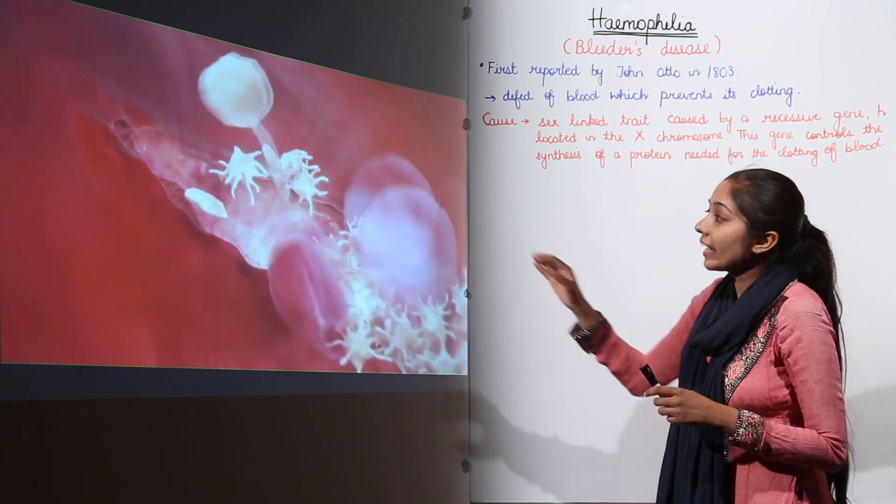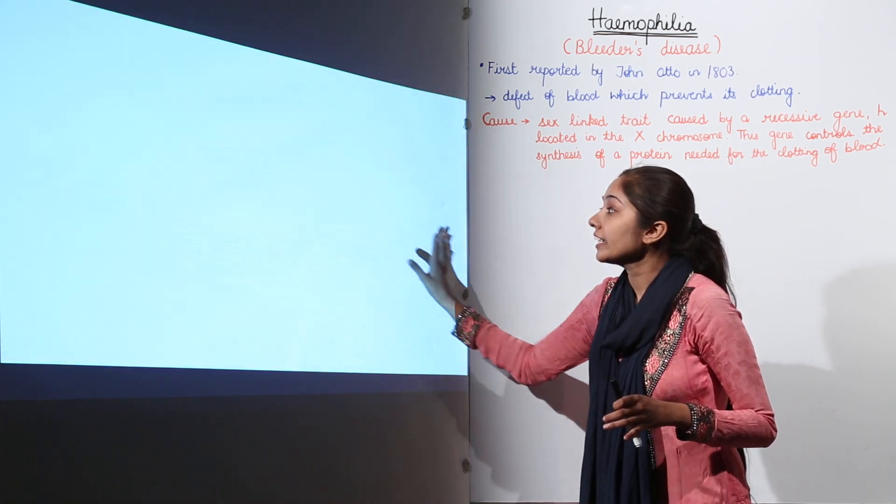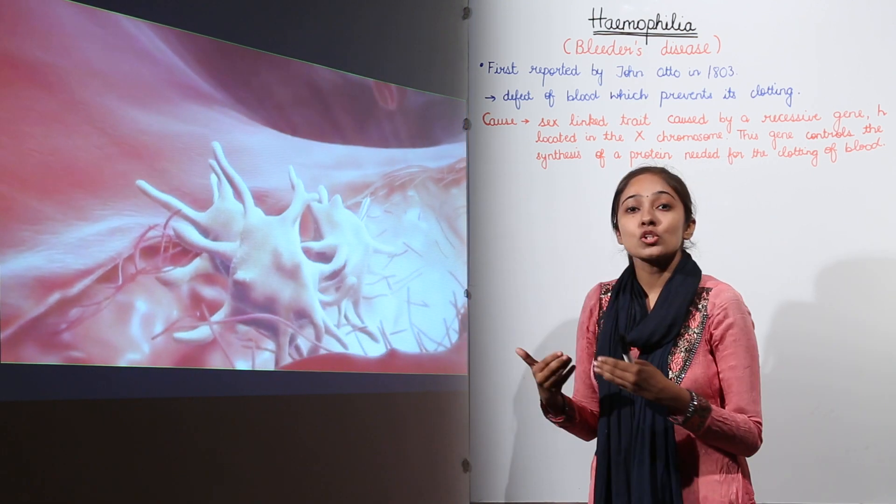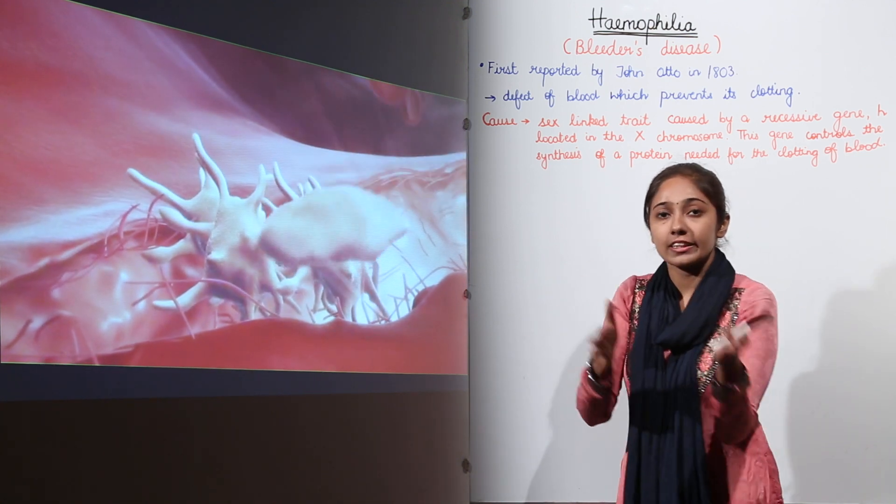So what happens at the site of injury, these platelets accumulate and cover that injured area. And with that, there is some activation of clotting factors. For example, clotting factor 8, clotting factor 9.